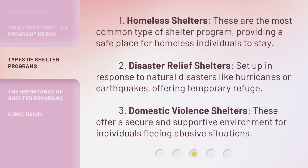There are several types of shelter programs. First, homeless shelters — the most common type, providing a safe place for homeless individuals to stay. Second, disaster relief shelters, set up in response to natural disasters like hurricanes or earthquakes, offering temporary refuge. Third, domestic violence shelters, which offer a secure and supportive environment for individuals fleeing abusive situations.